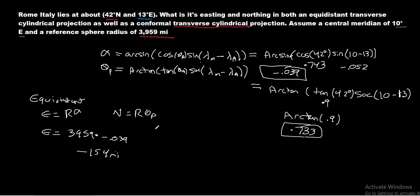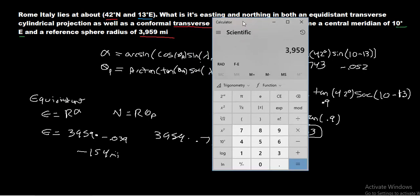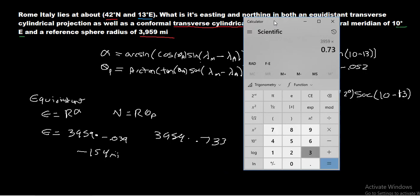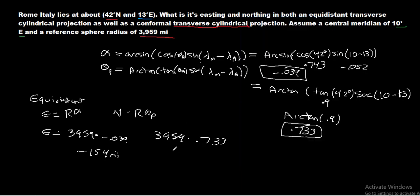The northing for the equidistant projection equals 3959 times theta_p of 0.733, which gives 2902 miles. I also realized a mistake: the formula should be theta_a minus theta_m, which means the easting should actually be positive 154 miles, not negative.